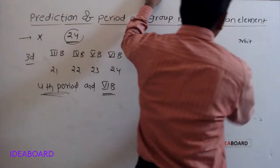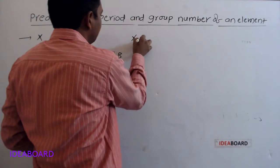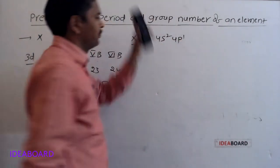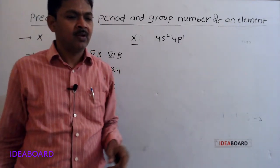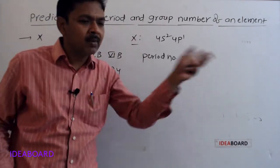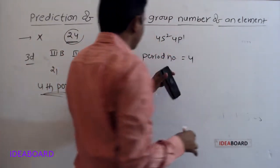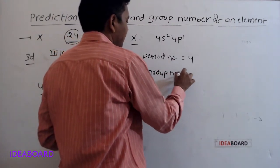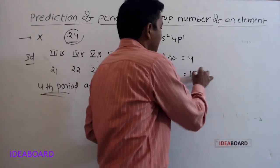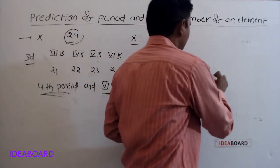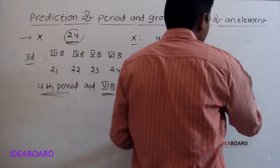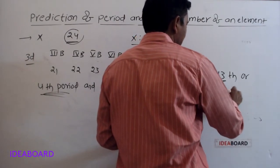Next question: for element X, the electronic configuration is 4s²4p¹. What is its position in the periodic table? Period number is 4. The element belongs to the p block. For p block elements, group number equals 10 plus number of valence s and p electrons: 10 plus 3 equals 13. So it belongs to the 13th group, also known as the 3A group.